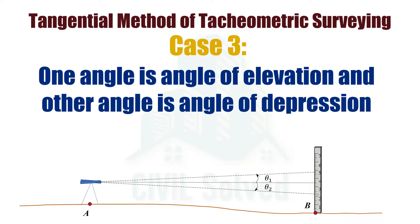Let's continue our talk on the cases of the tangential method. We are going to discuss Case Number 3 of the tangential method, in which one angle is the angle of elevation and the other angle is the angle of depression.